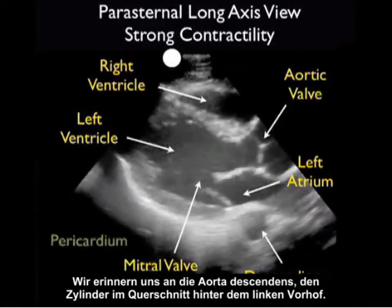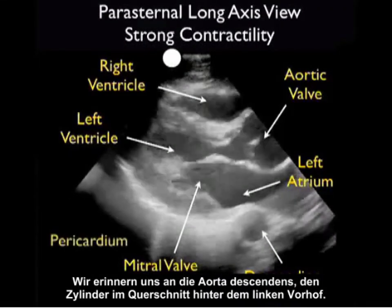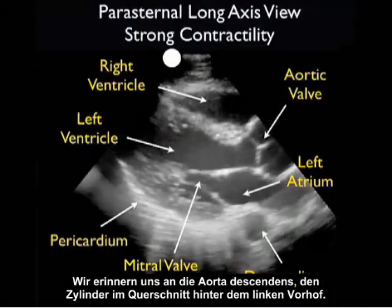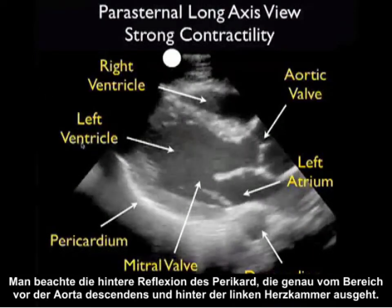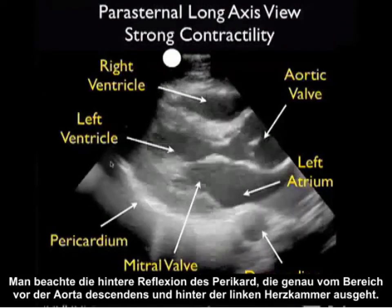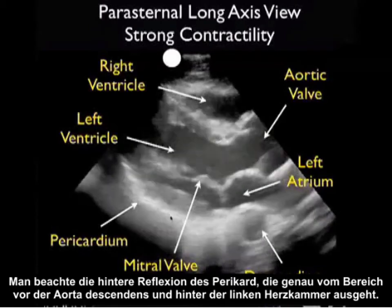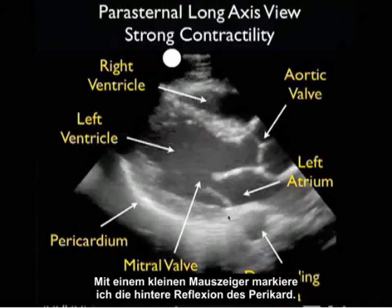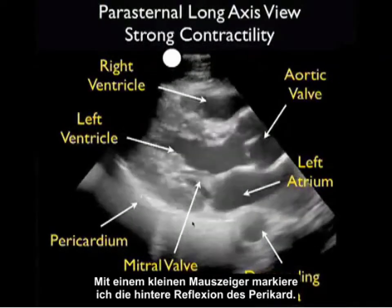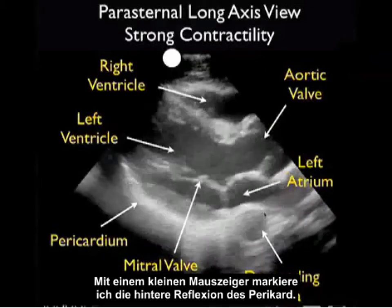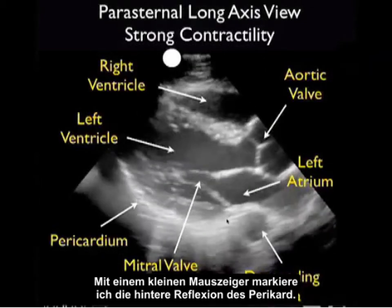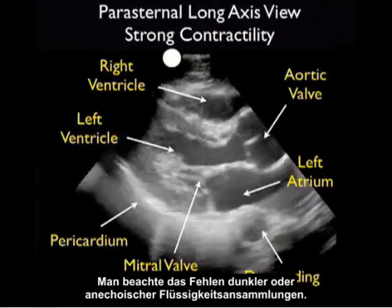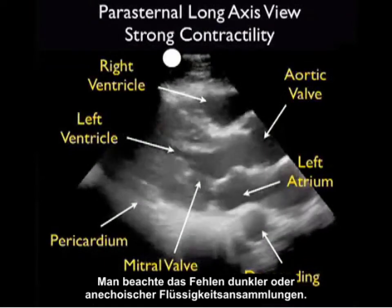Recall the descending aorta — the cylinder cut in cross-section just posterior to the left atrium — and note the posterior pericardial reflection coming off just anterior to the descending aorta and posterior to the left ventricle. With a small indicator arrow, I'll trace out the posterior pericardial reflection. Note here the absence of any dark or anechoic fluid collections.